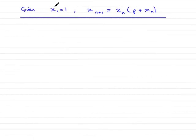Now in this question, we're given a sequence where the first term x1 is 1, and the (n+1)th term is equal to xn multiplied by (p + xn).